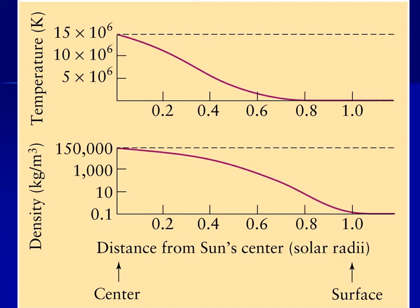Stellar models are our mathematical description of what's going on inside the sun. Working through the mathematics, we find that near the center of the sun the temperature is ballpark about 15 million Kelvin. As you work your way out, the temperature drops and drops. It drops sharply because you're producing energy in the core, and the further out you are, the less energy you're producing.